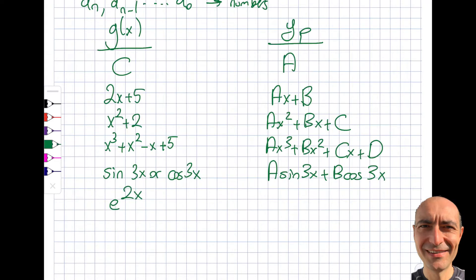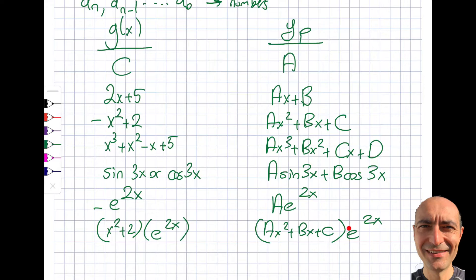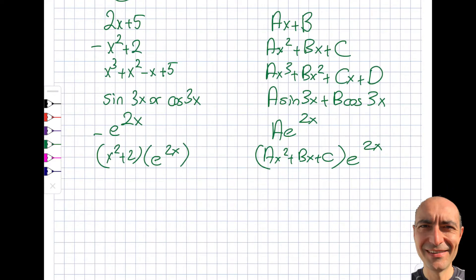If G of X is e^(2x), then you try A·e^(2x). And for combinations — for example, (x² + 2)·e^(2x) — you try (A·x² + B·x + C)·e^(2x). Note that you don't add a separate multiplicative constant for the exponential factor, because it gets absorbed into the polynomial coefficients A, B, C.